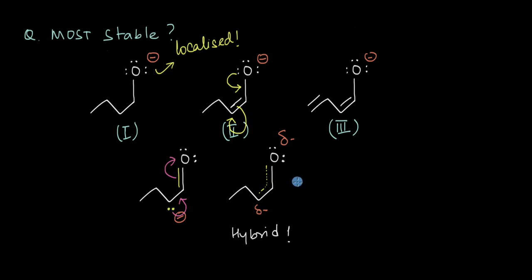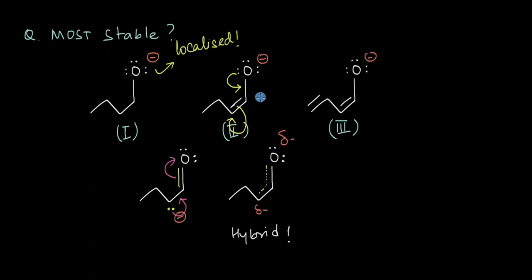In the resonance hybrid I've drawn a partial negative charge over the oxygen atom. This makes sense because this lone pair of the oxygen atom is getting pushed into the system, going away from the oxygen atom. It doesn't stay purely over the oxygen atom all the time, so this oxygen should not have a full minus one formal charge — the charge should be lower, only a partial negative. This delocalization also leads to the formation of a negative charge over the carbon atom, so the resonance hybrid should also show some partial negative charge over this carbon atom.